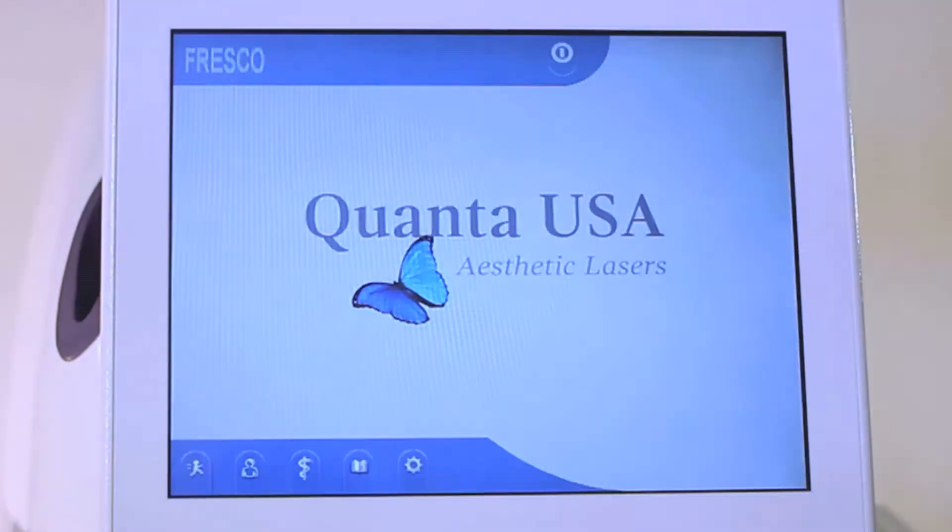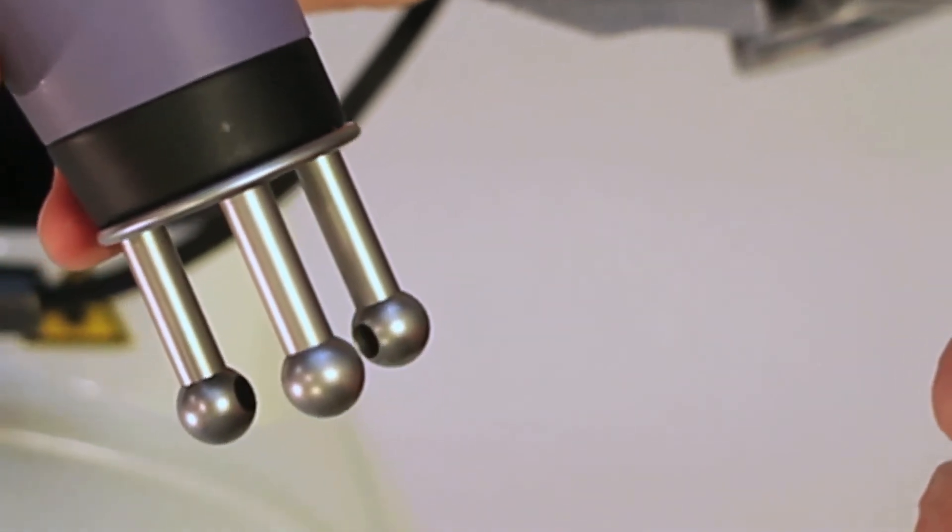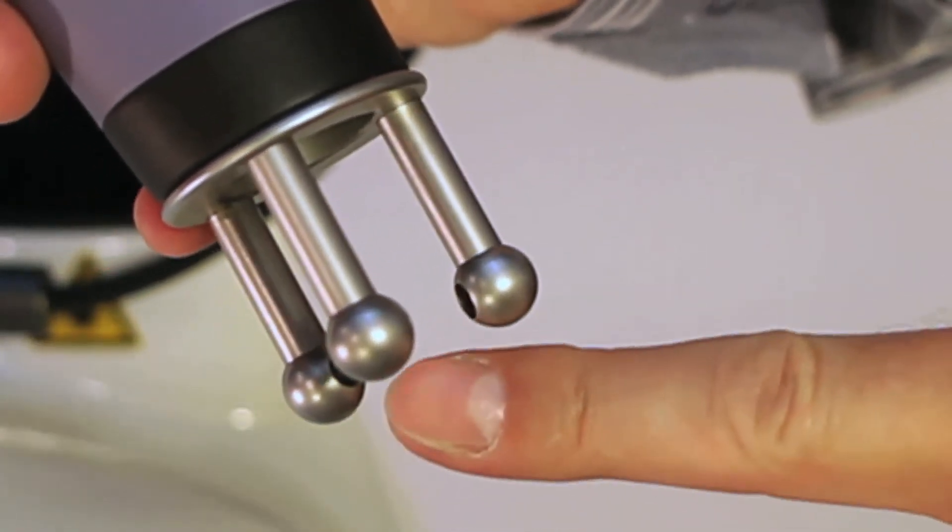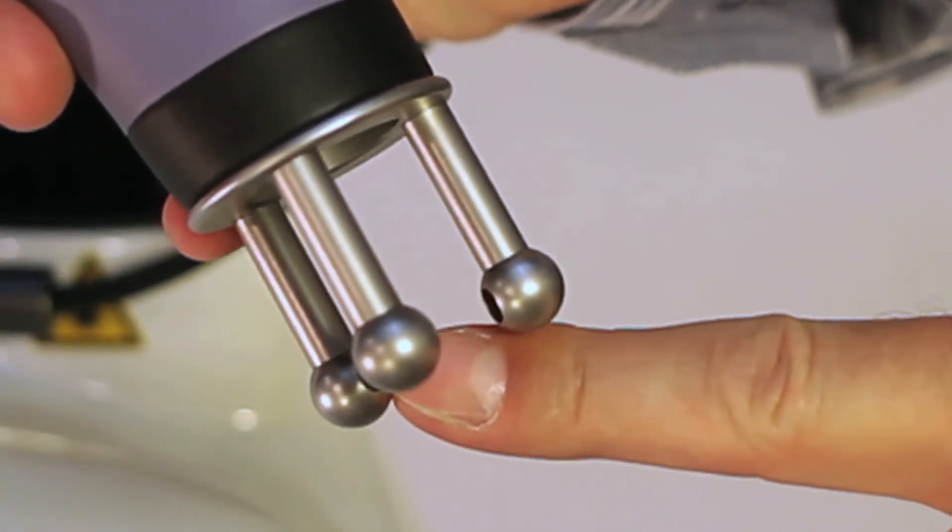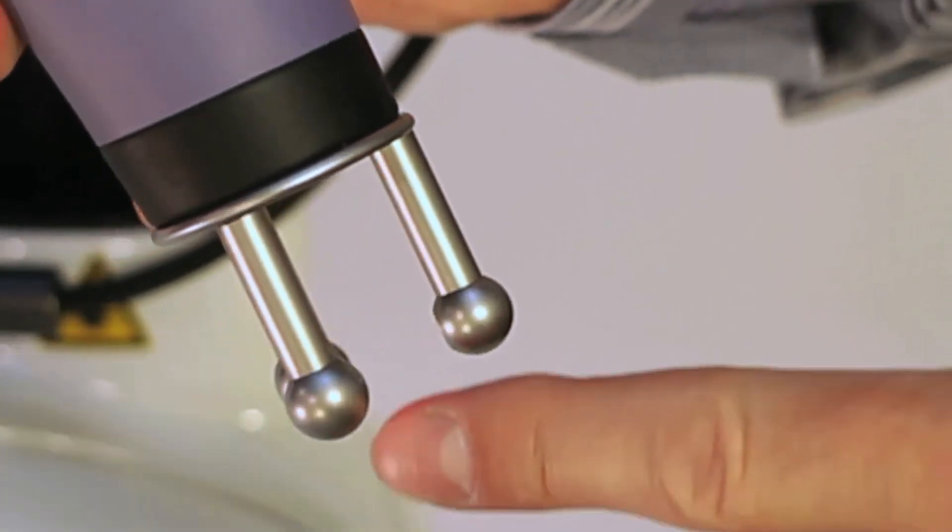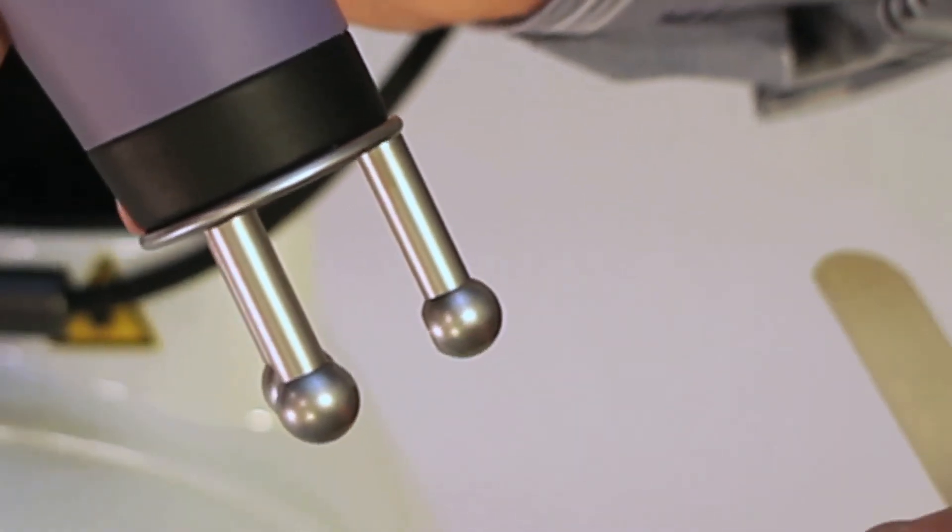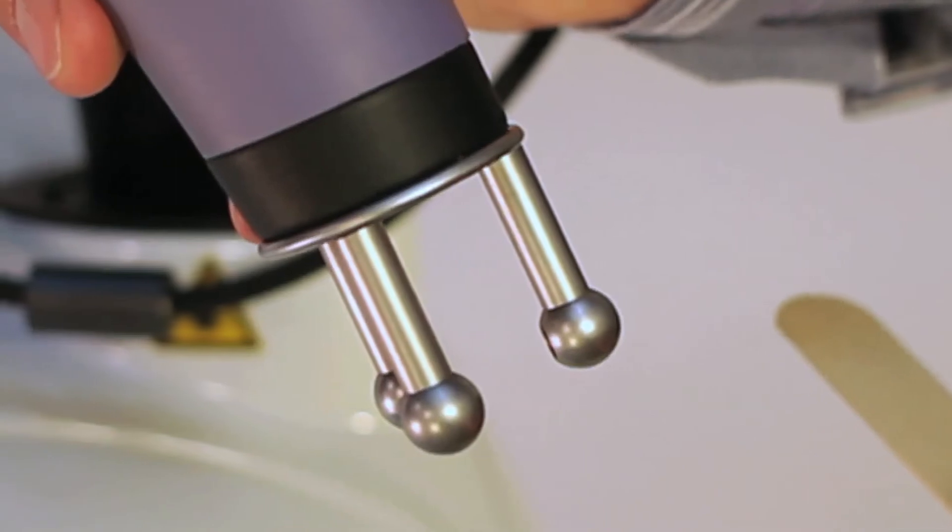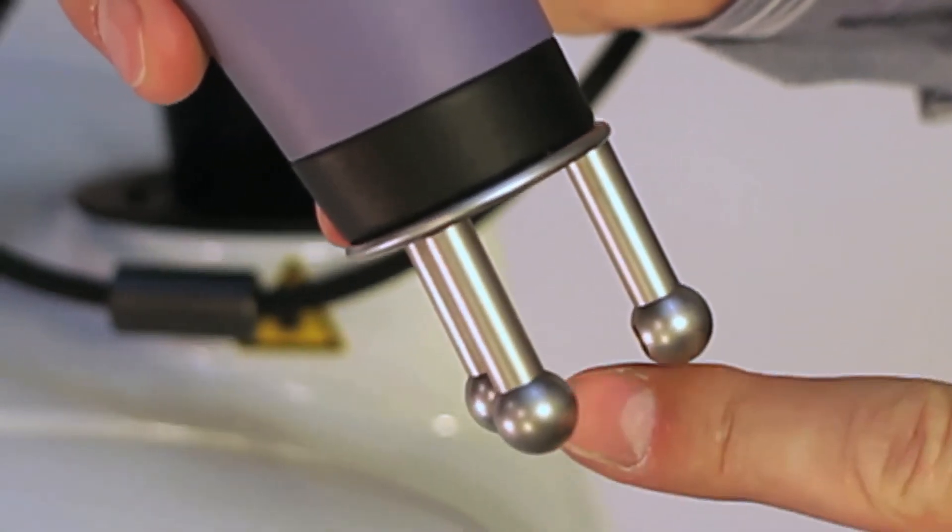Quanta Fresco. So this is the micro spot fractional handpiece. You'll notice inside each of these distance gauge prongs is a hole. That is where the smoke evacuator, the built-in smoke evacuator, comes from.